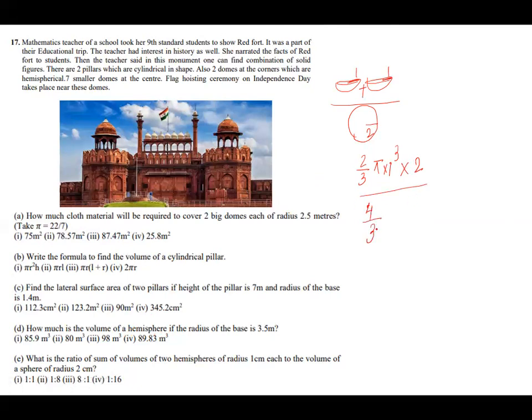So 4 by 3, it is sphere. Volume of hemisphere is equal to 2 by 3 pi r cube. Here there are 2 hemispheres, radius is 1. Here is 1 sphere, radius is 2. So pi into 2 cube. So we have to simplify. So I can write 2 times 2 is 4 with 4, 3 with 3, pi with pi. So 1 cube is 1, 2 cube is 8.